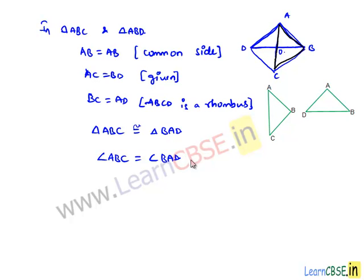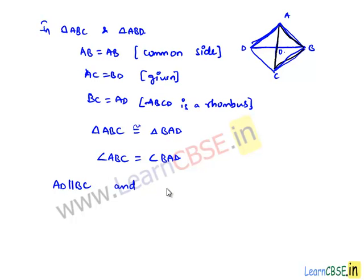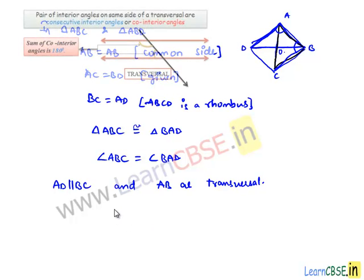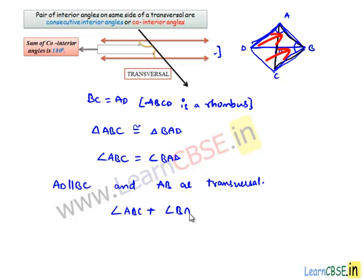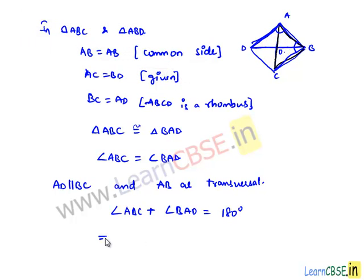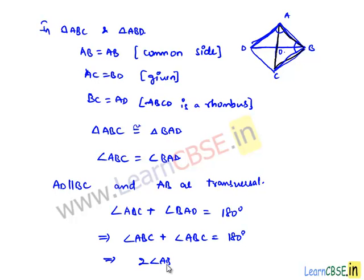Here the corresponding angles are equal. We know that AD is parallel to BC, as a rhombus is a parallelogram in which all sides are equal. By considering AD parallel to BC and AB as transversal, the sum of angles lying on the same side of a transversal interiorly is equal to 180 degrees. So angle ABC plus angle BAD is equal to 180 degrees. Since angle ABC equals angle BAD, we get 2 times angle ABC equals 180 degrees, which implies angle ABC is equal to 90 degrees.